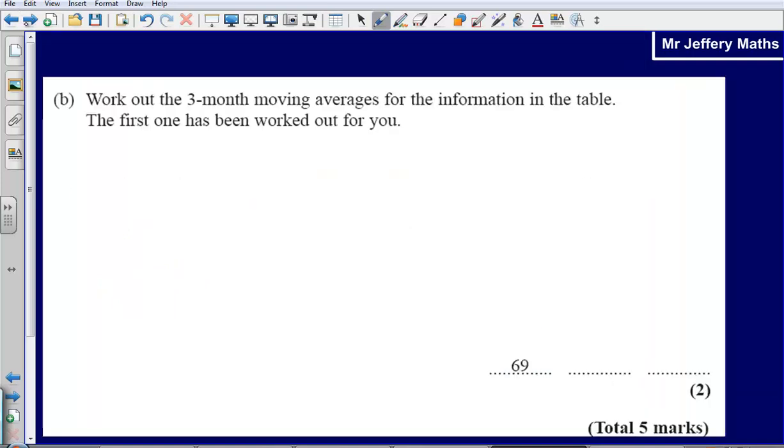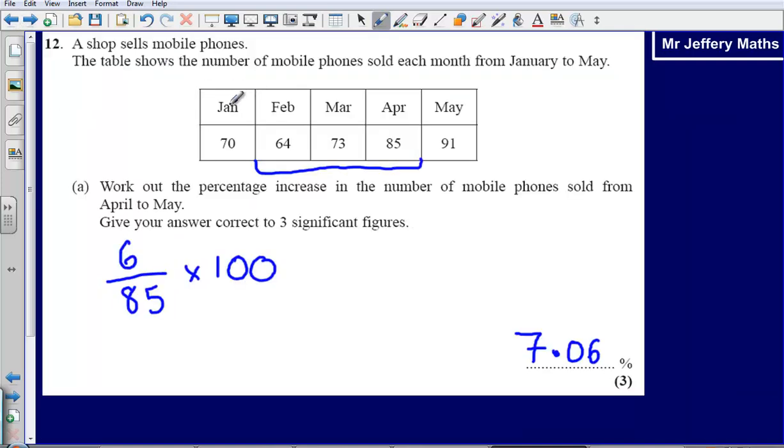We've already been told that 69 is January, February, March. We now need to work out what February, March, April is.